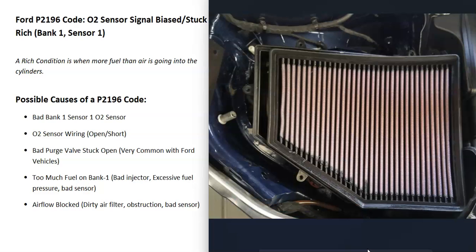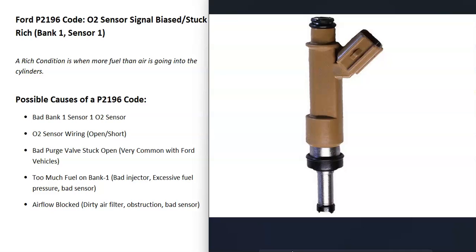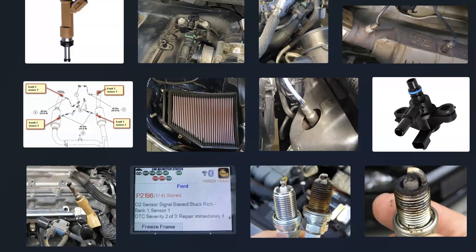Another thing that can cause this code is blocked airflow going into the engine — something like a dirty air filter, an obstruction blocking airflow, or a bad MAF (mass airflow) sensor reporting bad information back to the computer. If there is an issue with a MAF sensor, a fuel injector, or a fuel rail pressure sensor, you'll usually get other codes as well, so be sure to pay attention to any additional codes you're seeing.